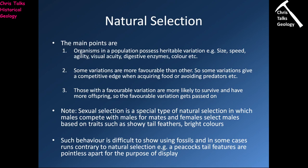Now some of these variations will be more favourable than others. In a given environment, one variation, one adaptation might give an individual an advantage over another individual of the same species. Because it has a competitive advantage, it might be able to get more food, avoid predators more efficiently, or get the best nesting sites. This is obviously a favourable thing.